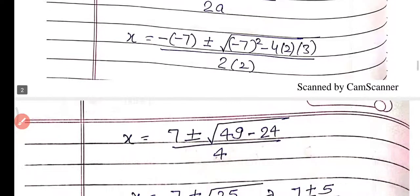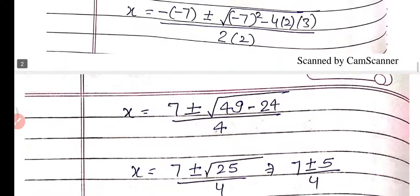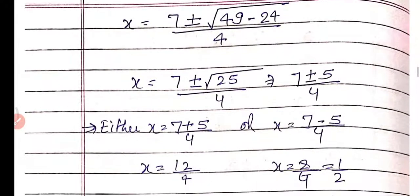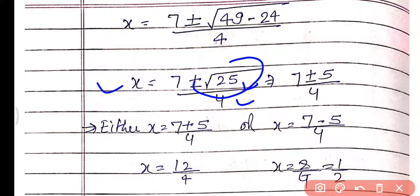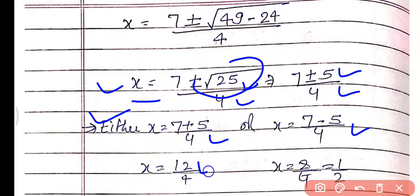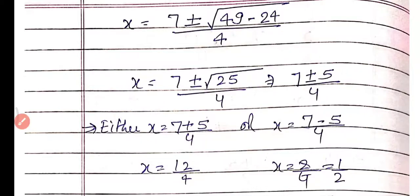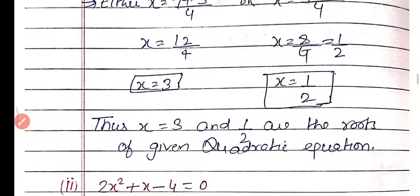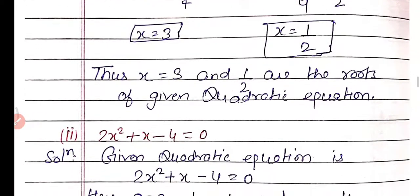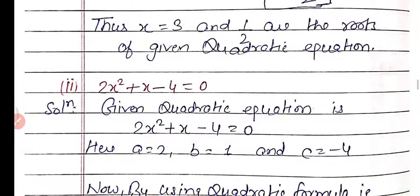Simplifying: x = (7 ± √(49 − 24)) / 4 = (7 ± √25) / 4. Since √25 = 5, we get x = (7 ± 5) / 4. So x = (7 + 5)/4 = 12/4 = 3, or x = (7 − 5)/4 = 2/4 = 1/2. Thus x = 3 and x = 1/2 are the roots of the given quadratic equation.